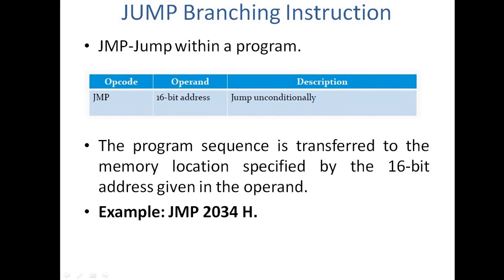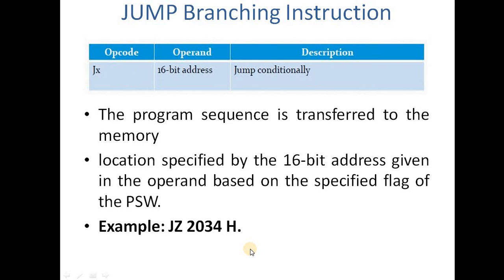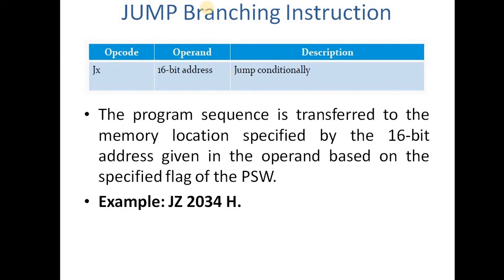Yahan hum dekhte hain jump conditionally — iska opcode hai JX. Yahaan X ki jagah par hum flag rakh sakte hain, toh us flag ki bit ko check karenge — ki agar woh flag set hai toh humein jump karna hai, ya phir woh flag reset hai toh humein jump karna hai. Is tarah se koi bhi test case rakha ja sakta hai. Iska operand hai 16-bit address — matlab is address par jaakar humein execution start karni hai, matlab is address par switch karna hai. Example: JZ 2034H — Z matlab zero flag. H jo hai woh hexadecimal ko indicate kar raha hai, iska matlab hai hamaara jo value diya hua hai 2034 yeh hexadecimal value hai.